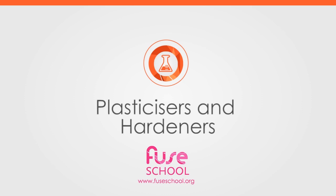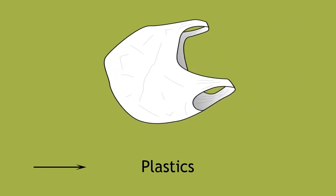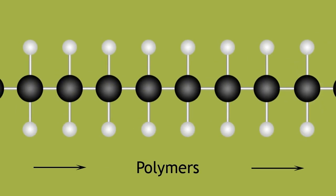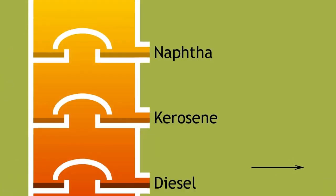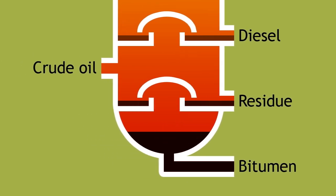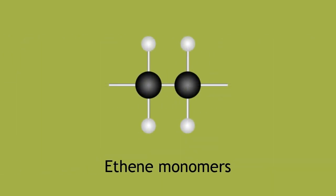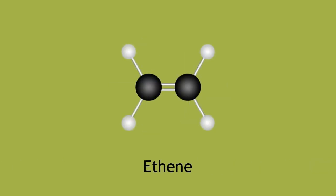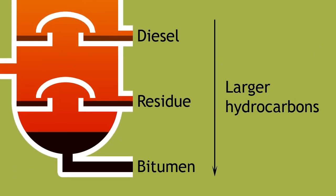In this lesson, we will learn about plasticizers and hardeners. You may be familiar with the term plastics to describe a very broad range of polymers, all derived from the products obtained from the fractional distillation of crude oil. For example, polyethene is a polymer of ethene monomers. Ethene is one of the products obtained from the cracking of larger hydrocarbons, which are obtained from the fractional distillation process.